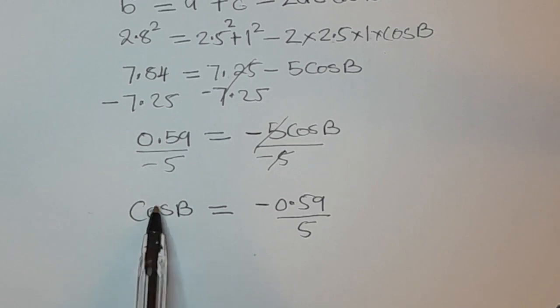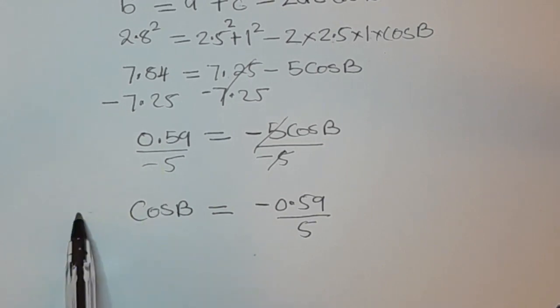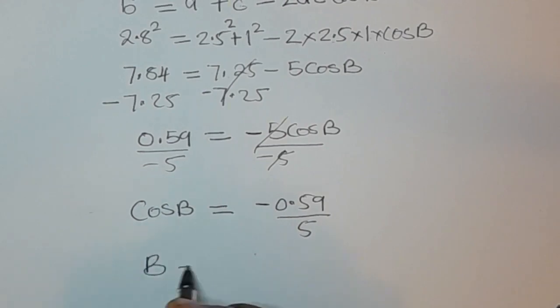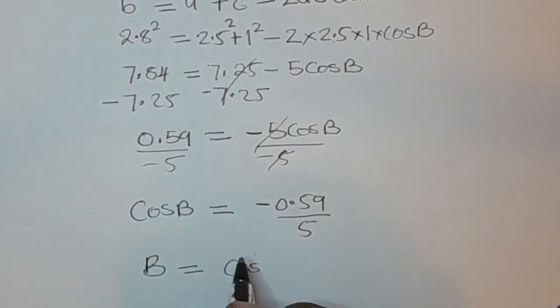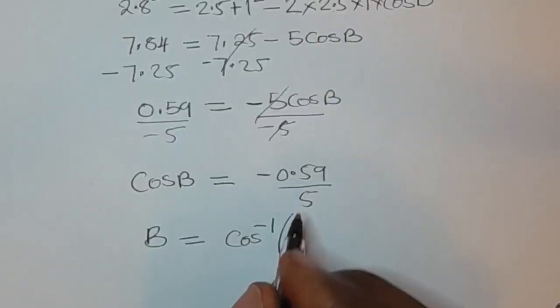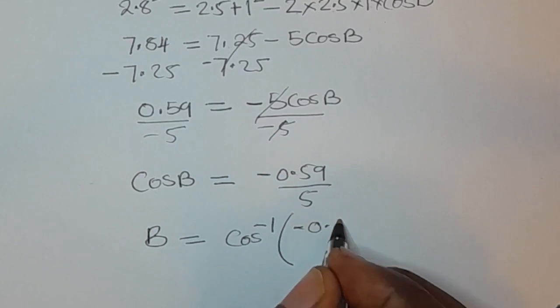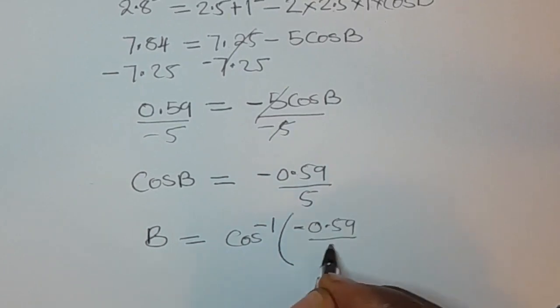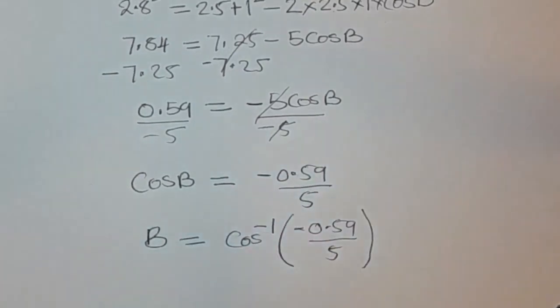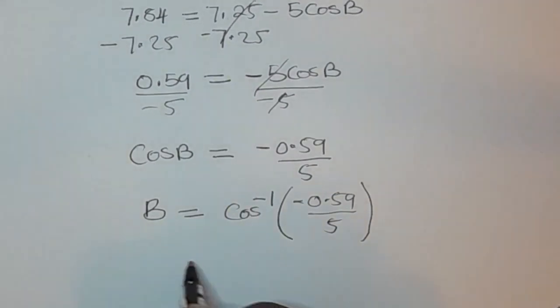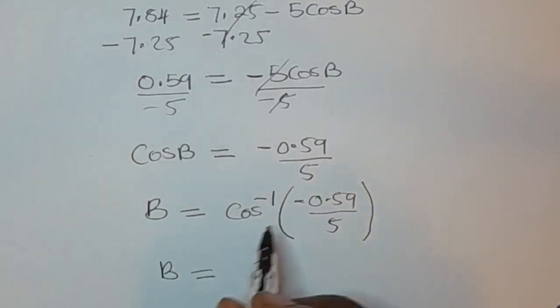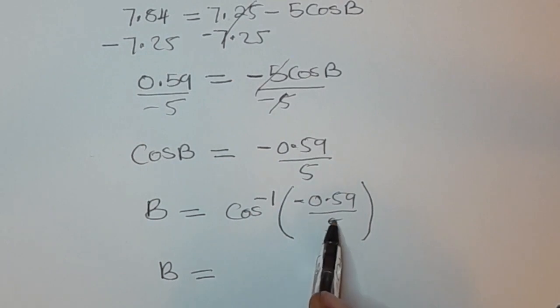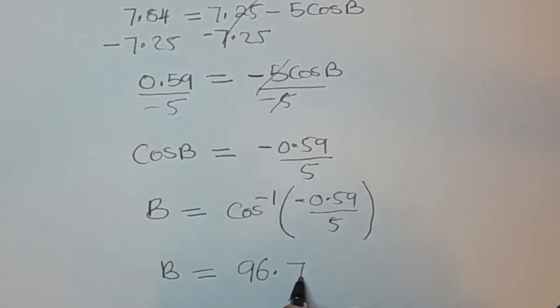When we take cos inverse on both sides we are going to see that this cos inverse will cancel, so we have B is equal to cos inverse of this negative 0.59 over 5. So you have B is equal to cos inverse of this, and you are going to have 96.77.